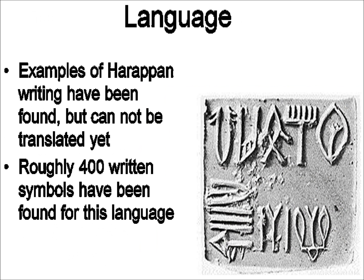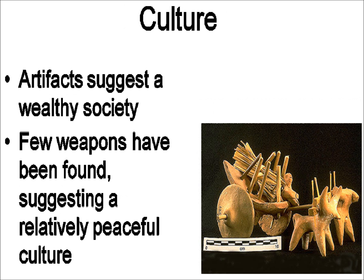Samples have been found of the Harappan language, but the problem is, unlike Egypt, we have no Rosetta Stone for Harappan. With 400 or so written symbols found, we have no way to translate any of them. This is part of why this section is so short in the book — we just don't have enough information to really study in depth. Without translating their writing, we learn a lot more about the Harappans from the artifacts they've left behind.